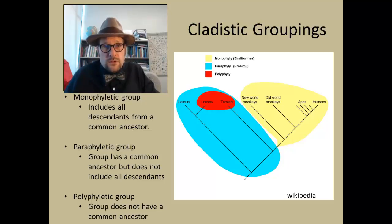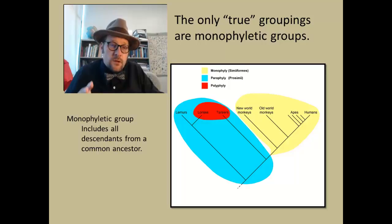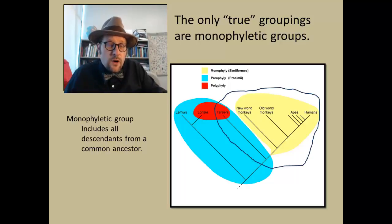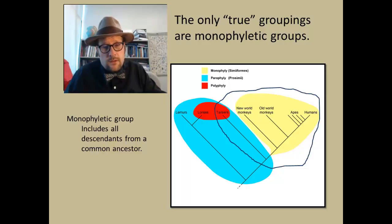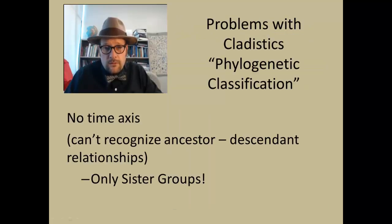This can be problematic because many fossil groups are paraphyletic — we don't always include living creatures or creatures from different time periods. The only groups everyone recognizes are monophyletic groups, which include all descendants from a common ancestor. For example, if we include tarsiers with the other primates, that becomes a monophyletic group requiring just one cut on the tree.